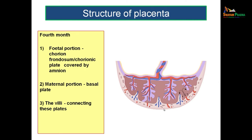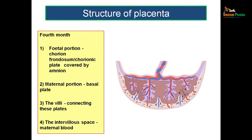In between the chorionic plate and basal plate, you can see many projections known as villi. The villi connect the chorionic plate with the basal plate, and it is through these villi that fetal capillaries traverse. This is how exchange happens between maternal blood and fetal blood. Since maternal blood and fetal blood do not directly mix, fetal capillaries travel through the villi and exchange with maternal blood in the intervillus spaces — the space between the villi filled with maternal blood.